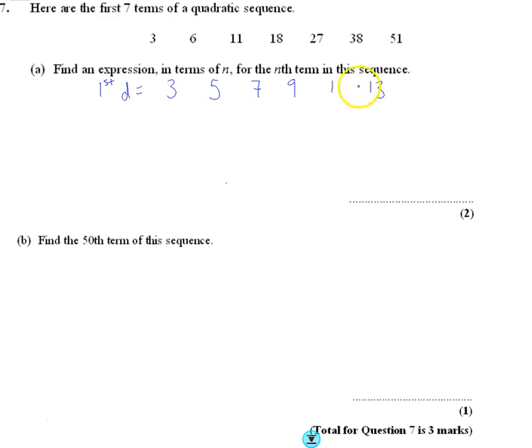So the first difference is a sequence of other numbers. Let's look at the second difference, the difference between the differences: 2, 2, 2, 2, 2. That tells us we find half of this number, so divide 2 by 2 which is 1, so it's 1n squared, or just n squared is the first part of our sequence.